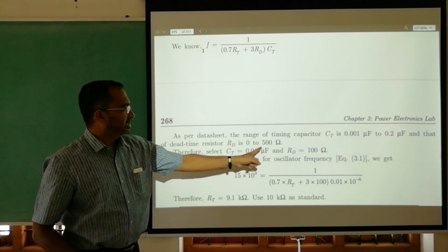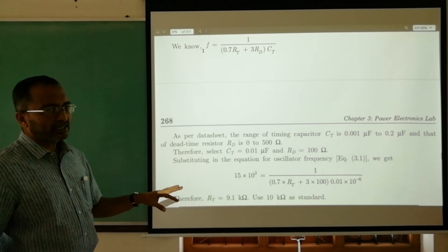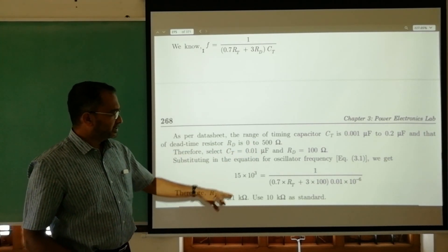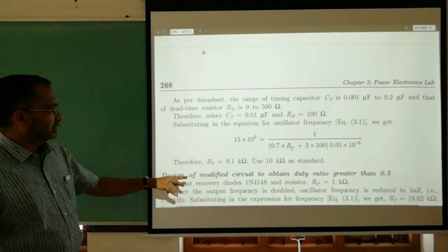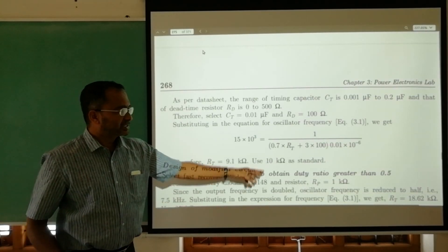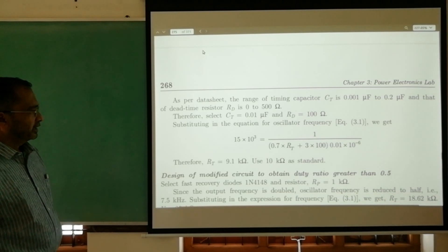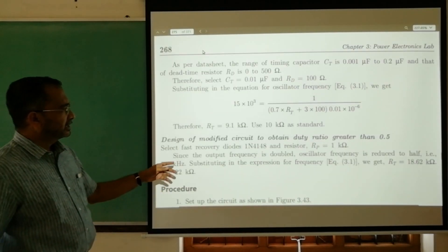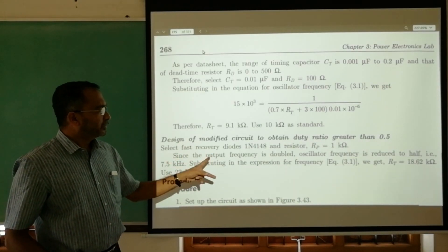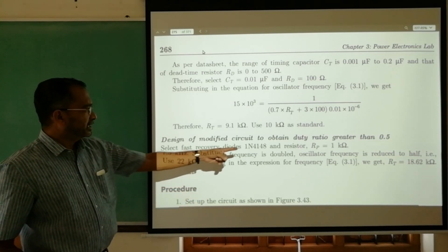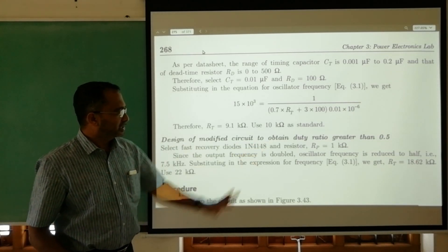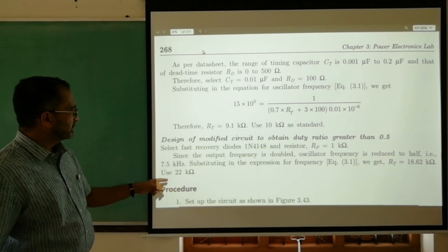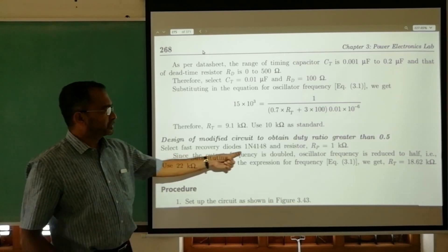We have certain minimum and maximum values that can be used with RD, CT, and RT. Since our frequency is fixed, we select the capacitor CT as given by the data sheet, and RD. Once CT and RD are selected, we put in this equation to get RT, which is 9.1 kilo ohm, so we take standard value 10 kilo ohm. To modify this, we use two diodes and a resistor of 1 kilo ohm. Diodes should be fast recovery diodes because this is high frequency—diodes 1N4148.